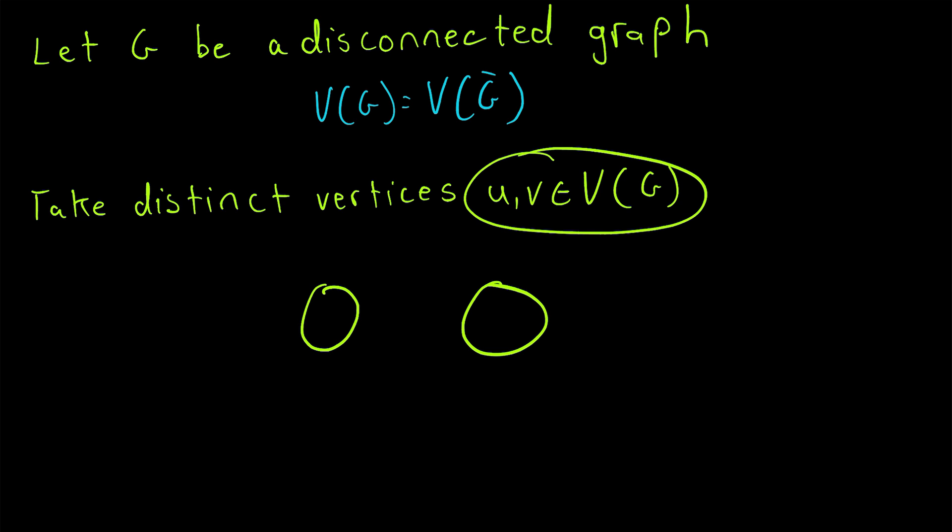So there's two possibilities with our two vertices. They're either in different components so U is here and V is here or they're in the same component. So that's how we will break this down.